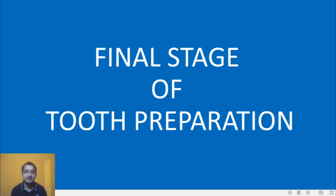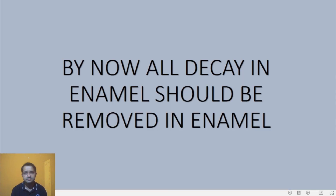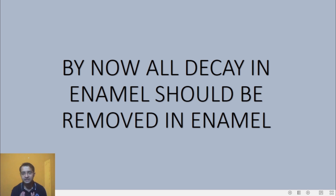Today is the second part of the fundamentals of tooth preparation, starting with the final stage of tooth preparation. Before reaching the final stage of cavity preparation, you should make sure that all the initial guidelines discussed in the earlier part are followed — for example, the depth should be minimum 0.2 millimeter into the dentino-enamel junction if you are doing it for dental amalgam.